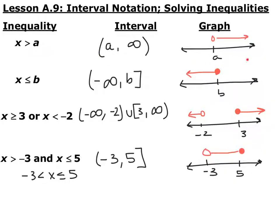The way we'd graph x > a is you'd have your number line with the letter a marked. It's an open circle, and then for greater than, the arrow goes off towards the bigger numbers, towards positive infinity, which is to the right.